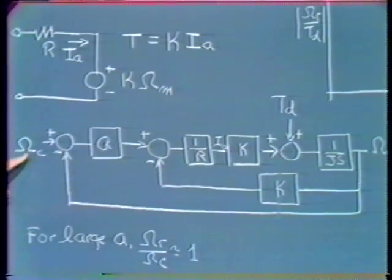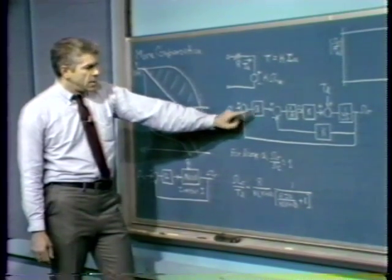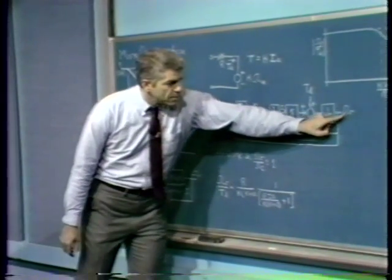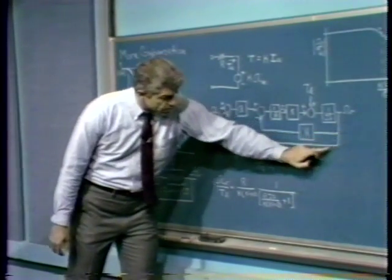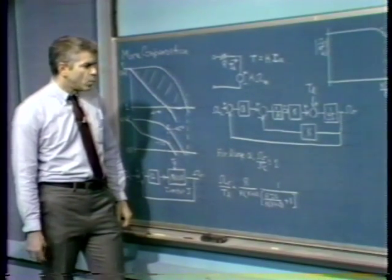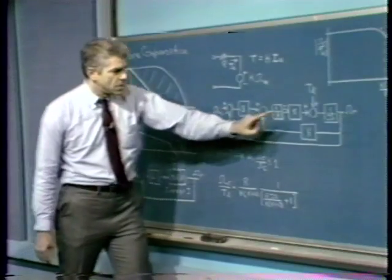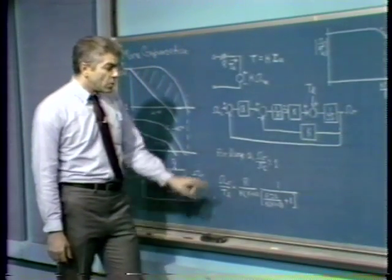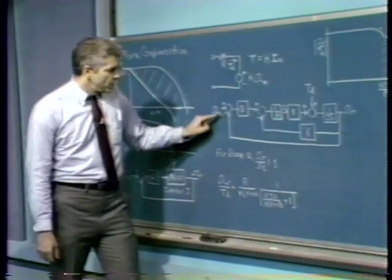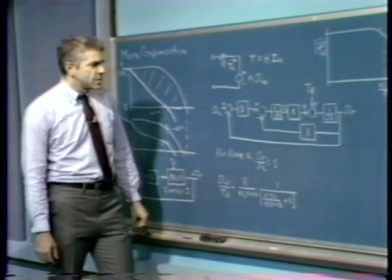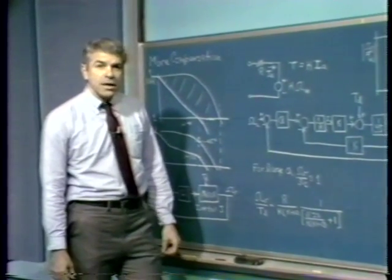We can now look at the properties of this feedback system. With a sufficiently large amplifier gain A, we have unity feedback between the output variable and the input summing point — a major loop with feedback transfer function F = 1. For large A, the gain from input to output is approximately unity, meaning response speed closely equals commanded speed. Our real interest in this example, however, is how well the system rejects torque disturbances applied to the motor-load combination.